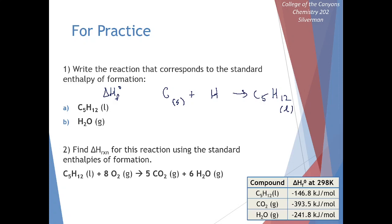To balance this reaction, we need to add some coefficients. Five carbons react with six hydrogen molecules to form one mole of liquid pentane: 5C(s) + 6H2(g) → C5H12(l). The energy exchanged when we do this reaction is the enthalpy of formation. Standard conditions are 298 Kelvin, one ATM of pressure, and one molarity for solutions.